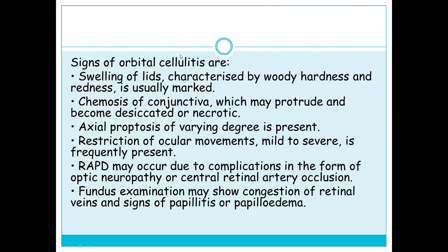Signs of orbital cellulitis include: swelling of the lids characterized by woody hardness and redness; marked chemosis of the conjunctiva which may protrude and become desiccated or necrotic; axial proptosis of varying degree; restriction of ocular movements (mild to severe); and a relative afferent pupillary defect (RAPD) may occur due to complications in the form of optic neuropathy or central retinal artery occlusion. Fundus examination may show congestion of retinal veins and signs of papillitis or papilledema.